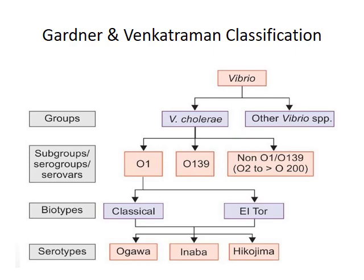Several Vibrio species are included in the non-O1/O139 group. O1 Vibrio cholerae is further classified into two biotype groups: Classical and Altor. This classification is based on biochemical characteristics. Both biotypes of Vibrio cholerae O1 are further classified into three serotypes: Ogawa, Inaba, and Hikojima.